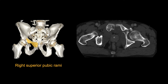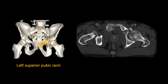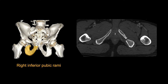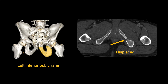For the superior pubic ramus injuries, the right side involves part of the pubic body, while the left side is higher and involves the anterior acetabulum. For the lower pubic ramus, the right fracture is relatively subtle with a thin cortical defect, but the left fracture is displaced and slightly offset.